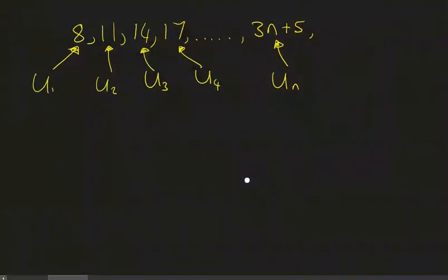There's also another alternative notation we can use to define a sequence, and that is with some brackets. If I had this, this would mean the sequence generated by that rule 3N plus 5, where N is a positive integer. So N is 1, N is 2, N is 3, and so on.